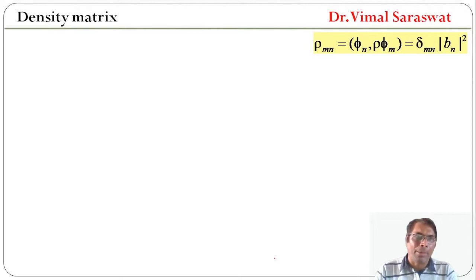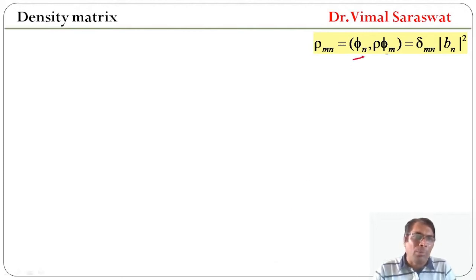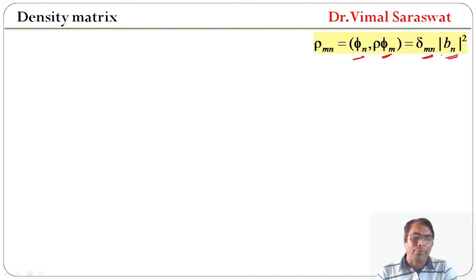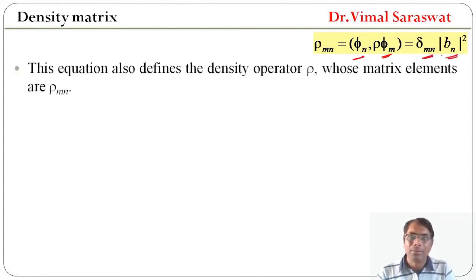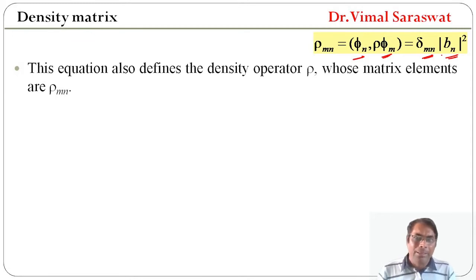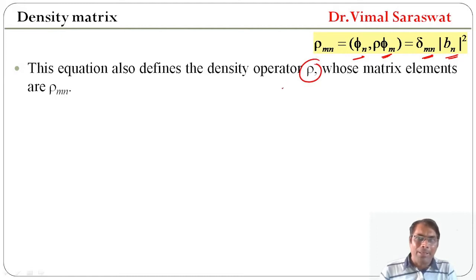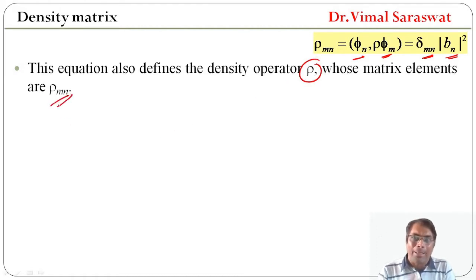Since rho_mn equal to <phi_n | rho | phi_n> equals delta_mn |b_n|^2. This equation also defines the density operator rho whose matrix elements are rho_mn.